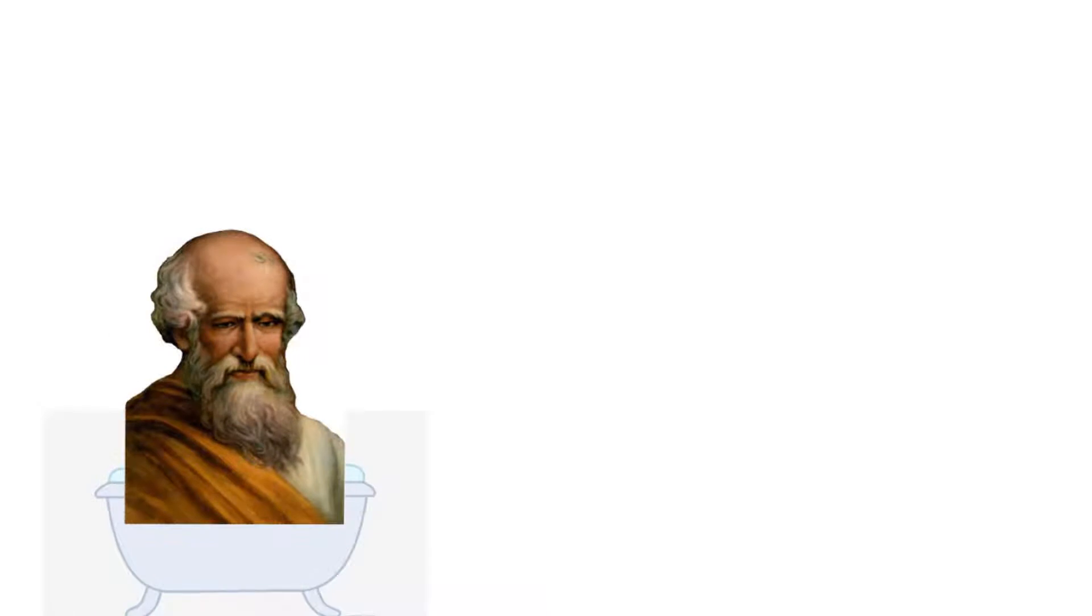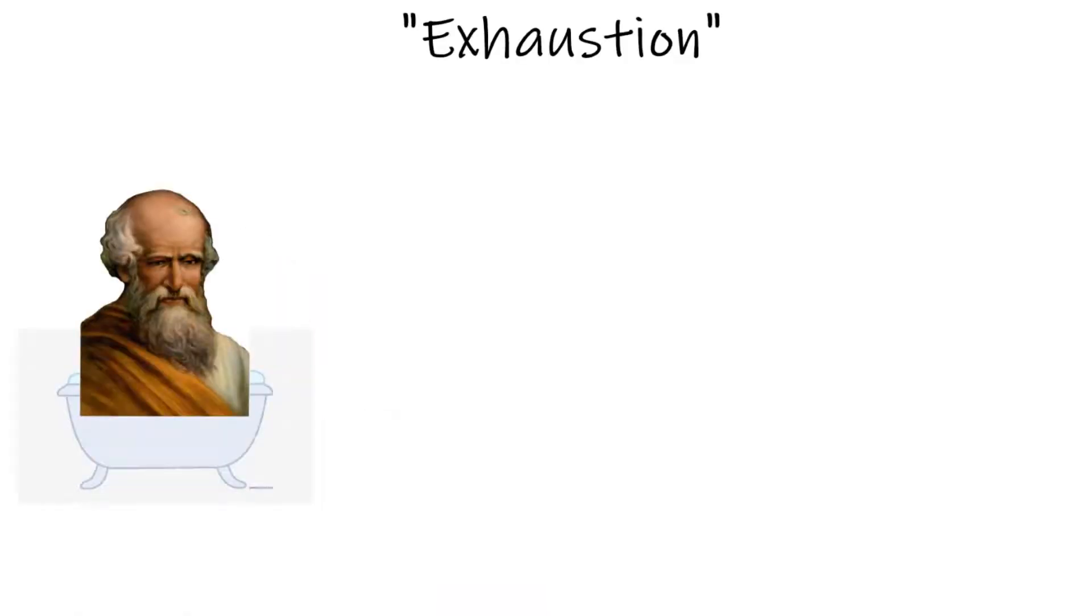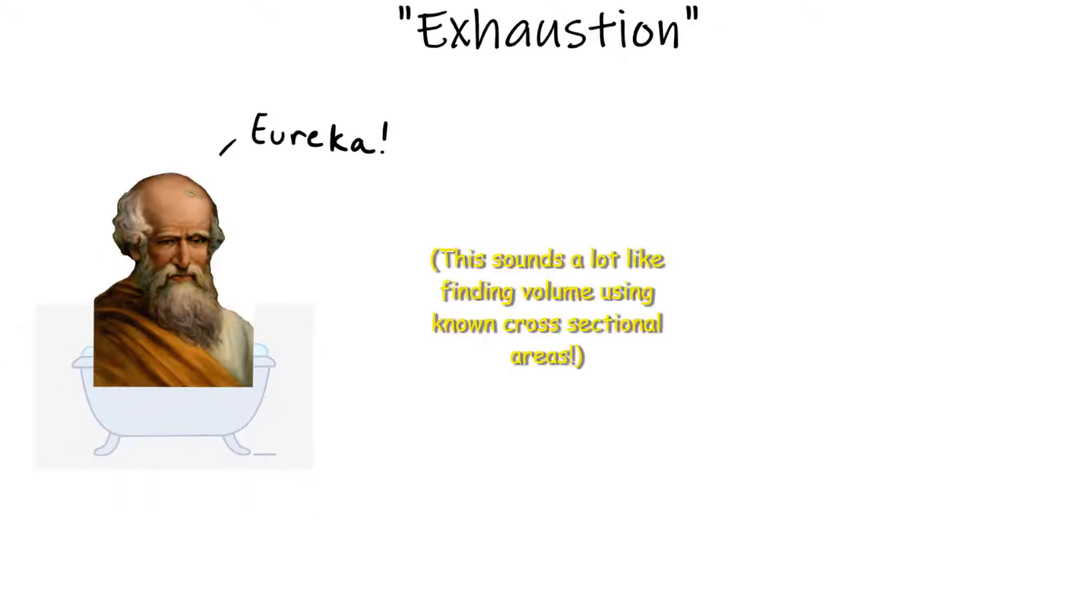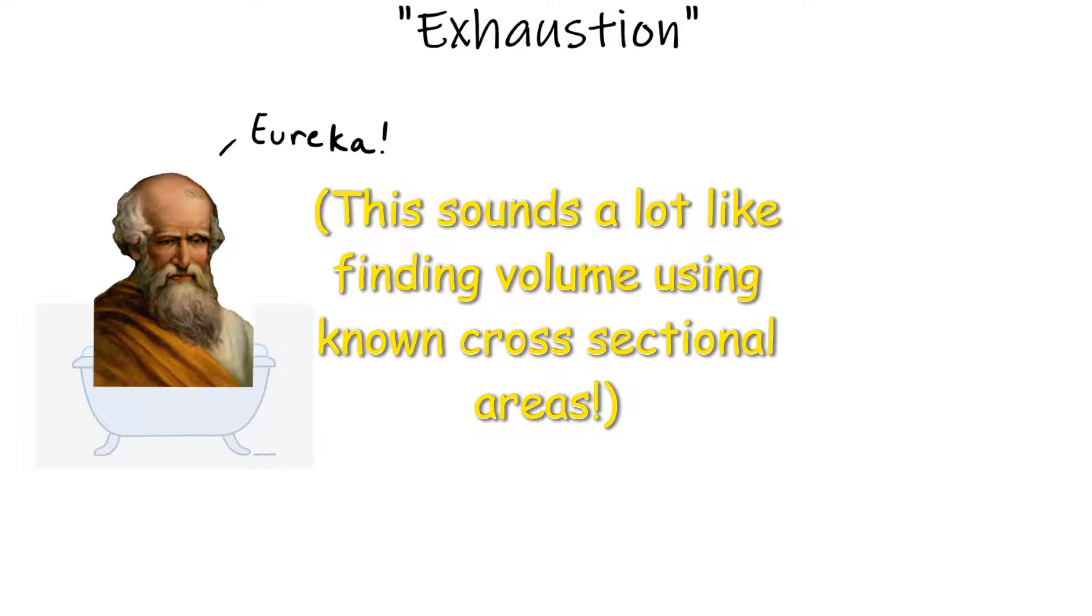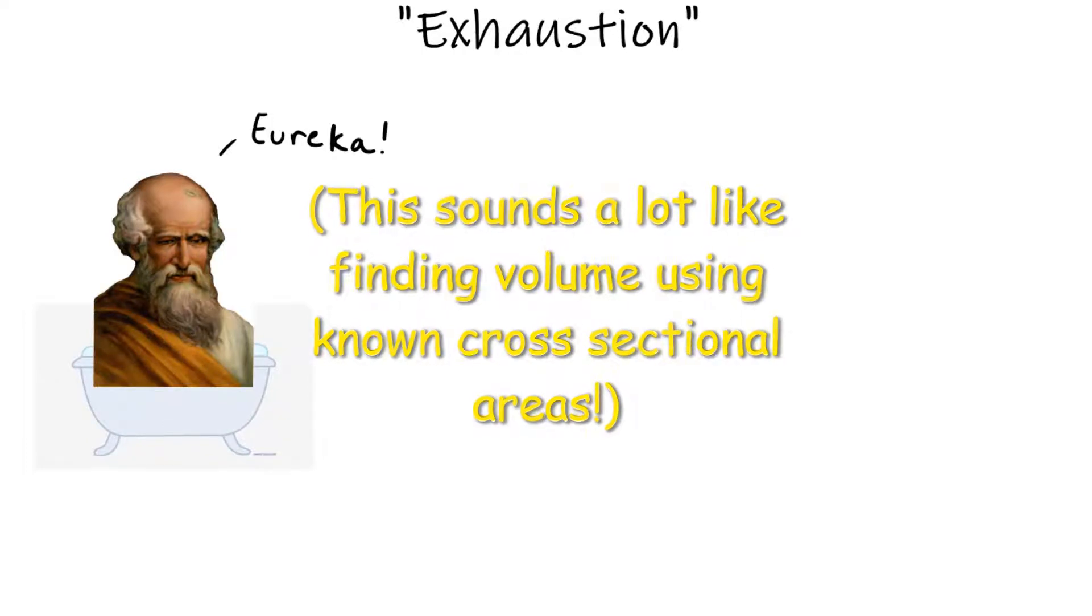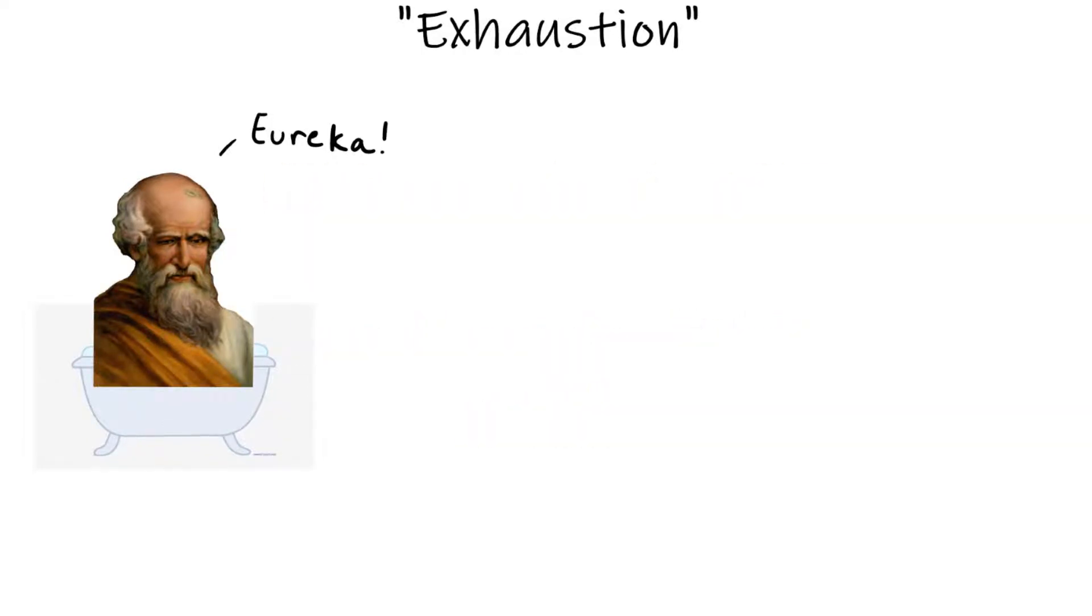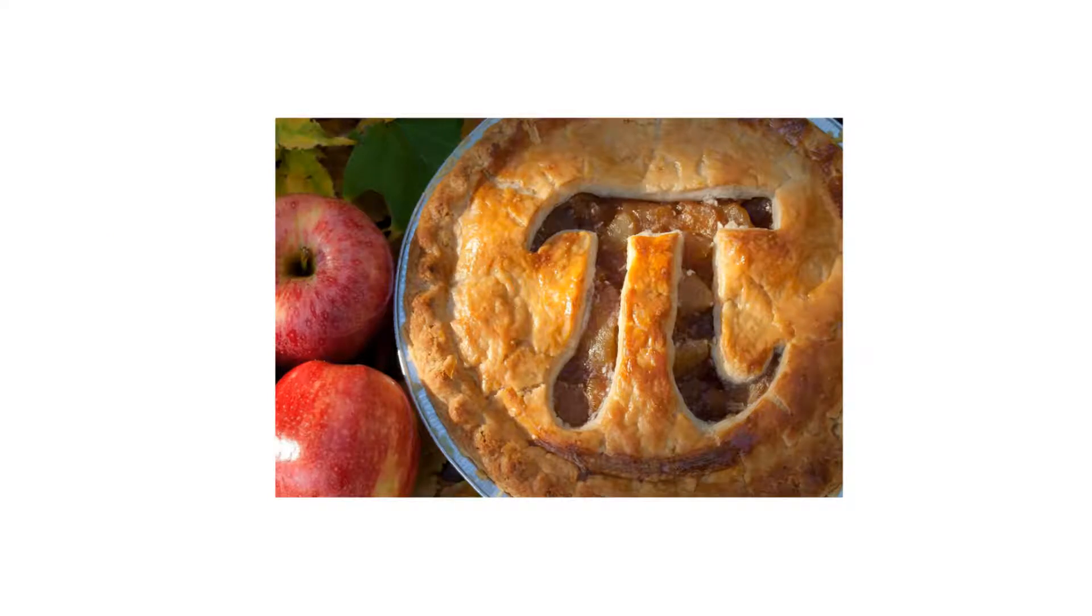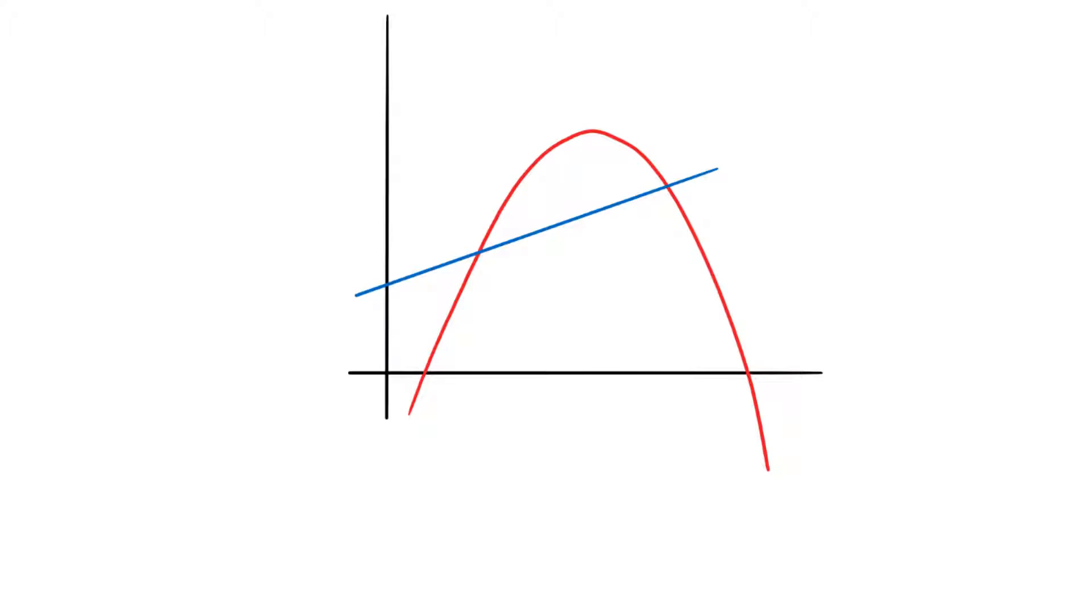To find plane area, he used the method of exhaustion, where he would use inscribed and circumscribed polygons with an increasing number of edges to find areas of curved shapes, such as circles. Archimedes was even able to approximate the value of pi by using exhaustion with triangles in a circle. He also extended this method to finding areas bounded between two curves, such as the area between a line and a parabola.